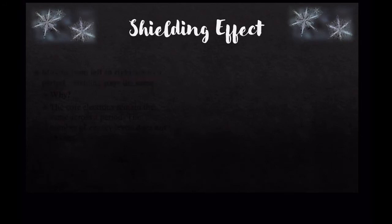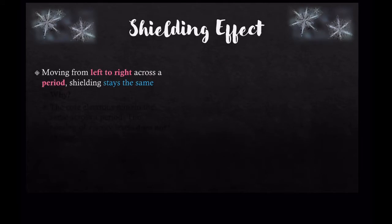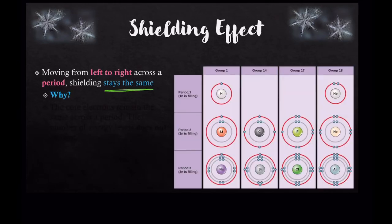Let's take a look at this trend as we move left to right across a period. When we go left to right, shielding effect stays the same — it doesn't change. Let's examine why by looking at elements in the same period. Let's take period two, for example.